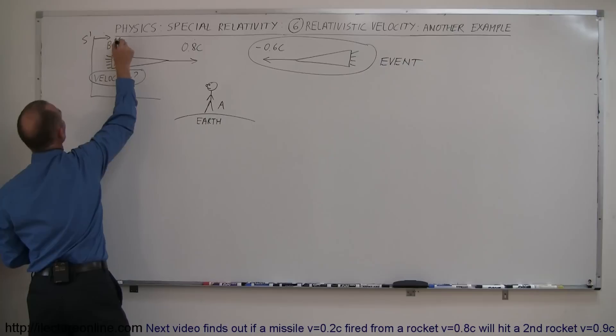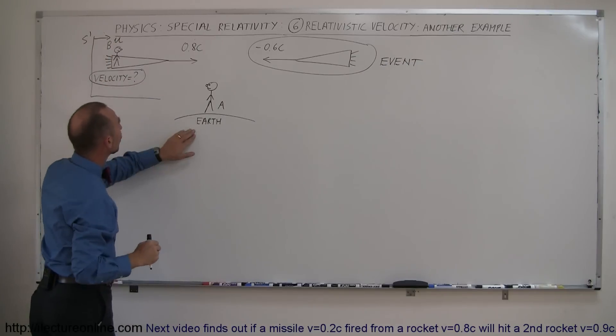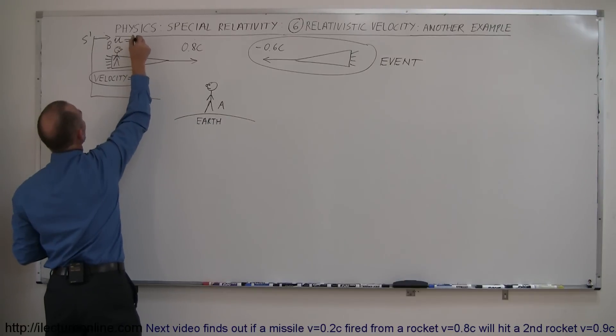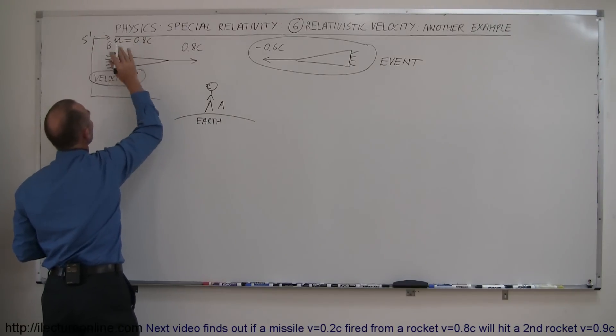Which means that this will have a velocity U relative to the Earth. And since this spaceship is moving at 0.8c, that means the reference frame is also moving at 0.8c. So we've determined U.